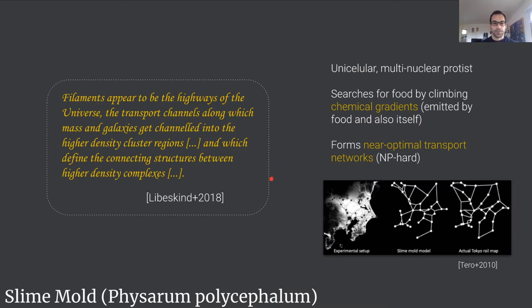For us, quoting a paper from two years ago, the filaments of the cosmic web appear to be the highways of the universe, the transport channels along which the mass and galaxies get channeled into higher density cluster regions and which define the connecting structures between higher density complexes. In other words, the cosmic web is the transport network of the universe and we are using slime mold to reconstruct it.